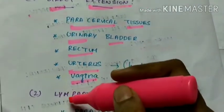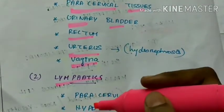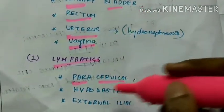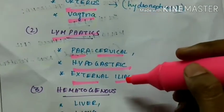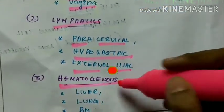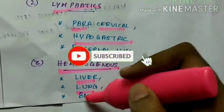Next is the spread through lymphatics which includes paracervical, hypergastric and external iliac spread and the third is hematogenous spread to the liver, lung and bone marrow.